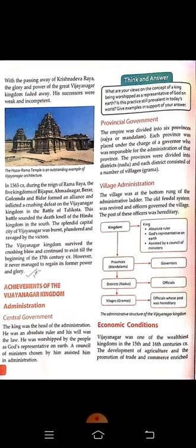Provincial government: The empire was divided into six provinces called Rajya or Mandalam. Each province was placed under the charge of a governor, similar to our present state government. The governor was responsible for the administration of that province. Each province was further divided into districts called Nadu, and each district consisted of a number of villages called Grama.